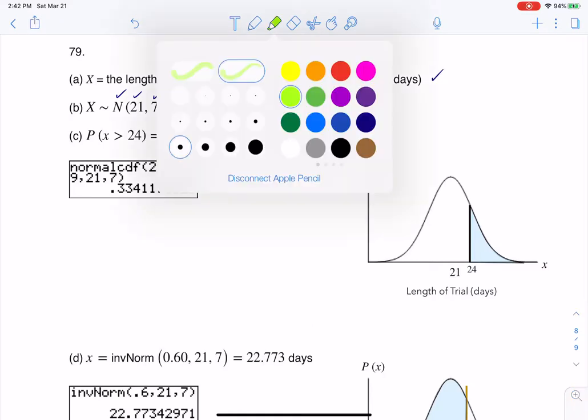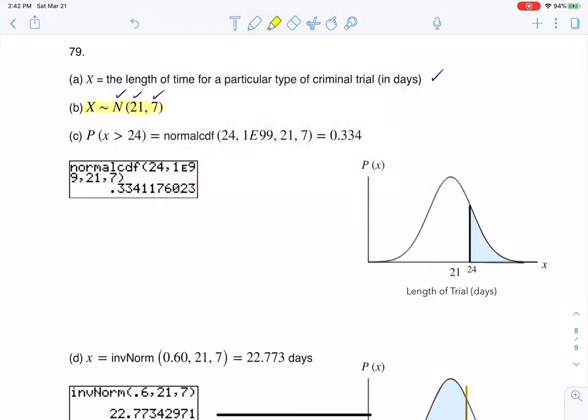Our variable is the length of time for this particular type of criminal trial, and the units are days. And there you can see my distribution. They're telling me it's normally distributed, meaning I know I'm going to make a bell curve. The mean's 21, so I'm going to put 21 under the peak, and then I'm going to use 7s to help me scale out my x-axis.